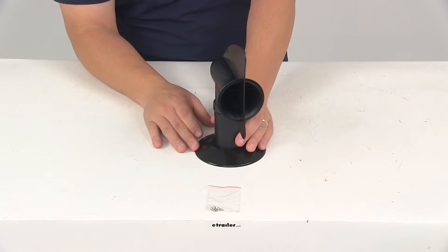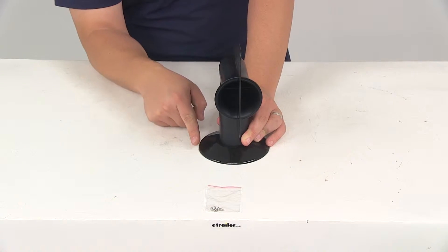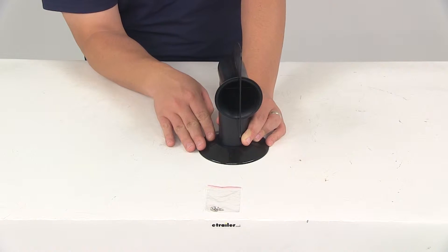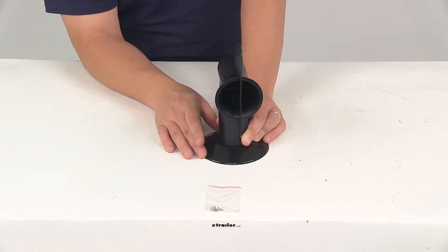This piece is going to be a trim piece. You will want to use some caulk. They recommend using 100% silicone caulk to ensure a nice watertight and odor-tight connection.